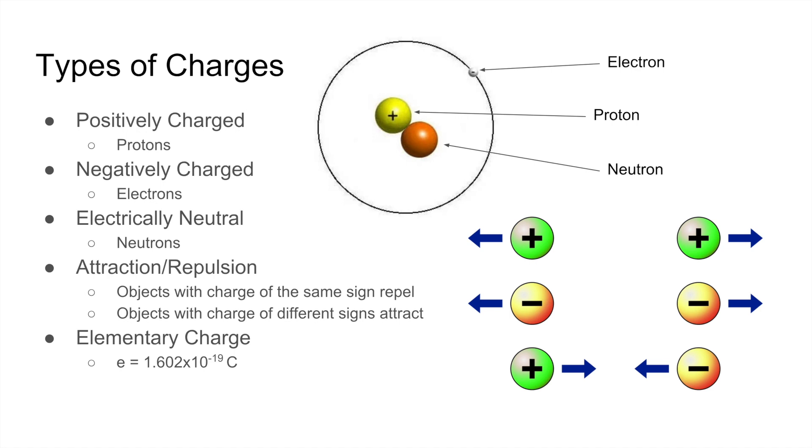And a very important concept in this chapter is the idea of an elementary charge. That's given by e equals 1.602 times 10 to the negative 19 Coulombs. Charges can only be multiples of this fundamental charge. You can't have something that's a fraction of this charge. It can only be multiples of e. And this charge is also the same charge that an electron holds.